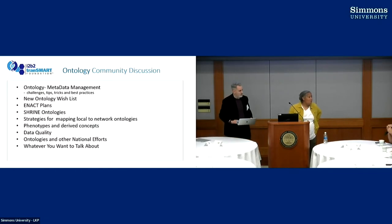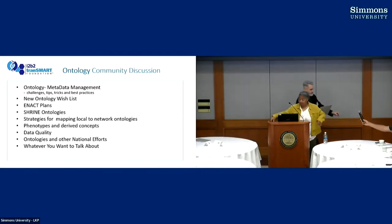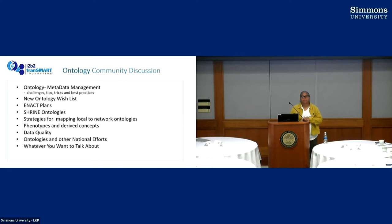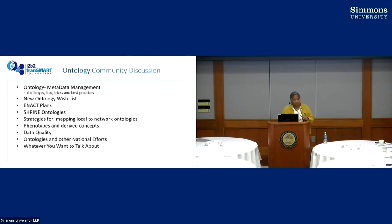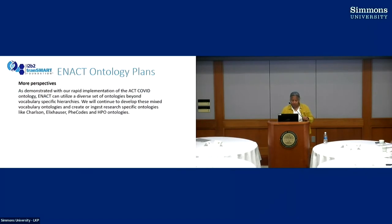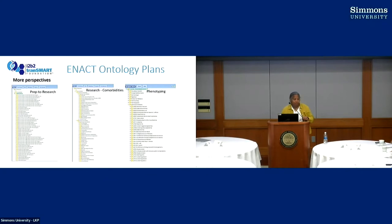There are a ton of ontologies in BioPortal — is there any thought about getting a subset: not just the A-list but a B-list? For example, Mary is looking for a cancer ontology, and if there was a B-list that said 'cancer — this one is what a lot of people use,' that would really help her. It turns out it's being done in Excel, so Kavi would probably say you need to use his ETL tool.